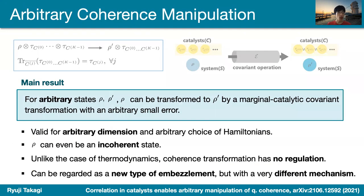In this work, we show the surprisingly strong capability of marginal catalytic transformations. Indeed, we show that if we have the correlation of many catalysts, then any state transformation is possible. For arbitrary states ρ and ρ', you can transform ρ to ρ' by marginal catalytic covariant transformation with arbitrarily small error. This is valid for arbitrary dimension, giving a general characterization of such transformations.